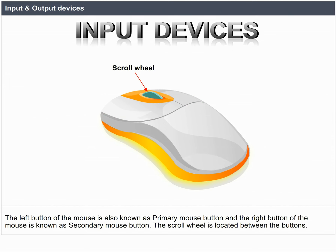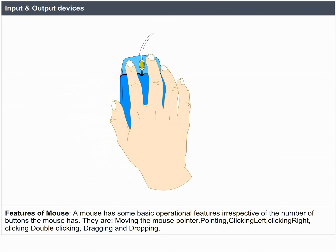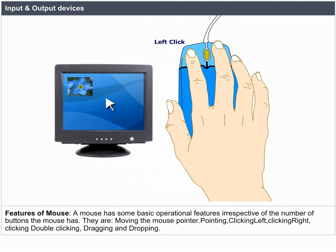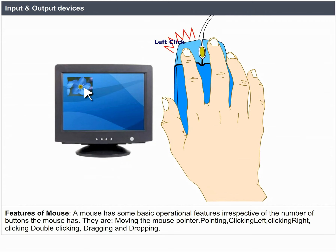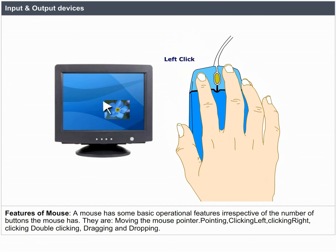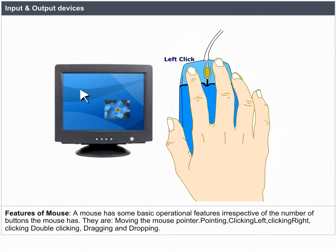Features of a mouse. A mouse has some basic operational features irrespective of the number of buttons it has. They are: moving the mouse pointer, pointing, clicking, left clicking, right clicking, double clicking, and dragging and dropping.